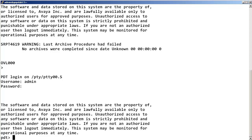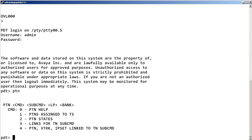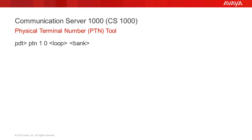To get help on the PTN Tool, enter PTN or PTN space 0. To print out all the PTNs assigned to time slots in any given loop and bank, enter PTN space 1 space 0 space the loop number space the bank number.